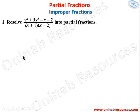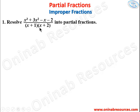We start with Problem 1: resolve 3x³ + 3x² − x − 2 over (x+1)(x+2) into partial fractions. The highest degree at the numerator is 3, and when the denominator is expanded the highest power is x², so this is an improper fraction because the highest power at the numerator is greater than that at the denominator. The denominator consists of linear factors, non-repeated.